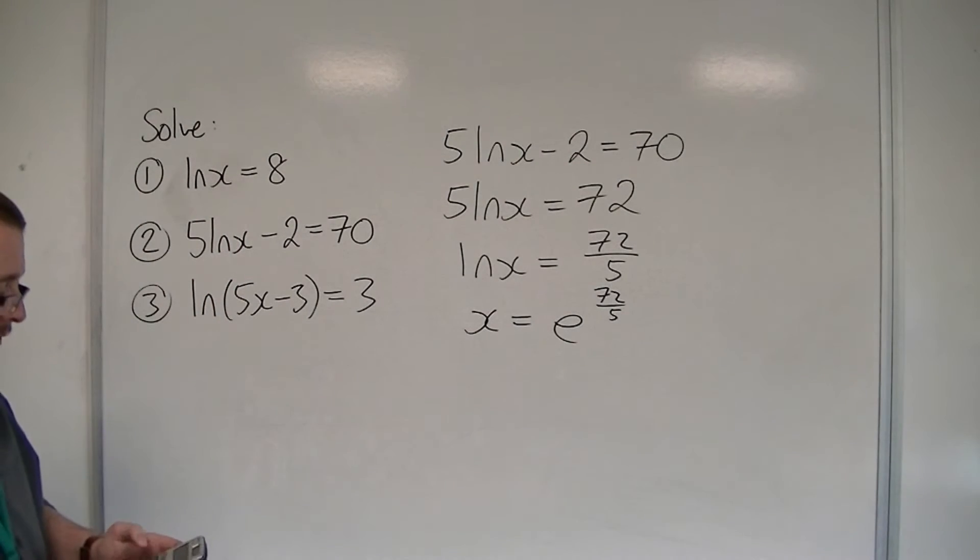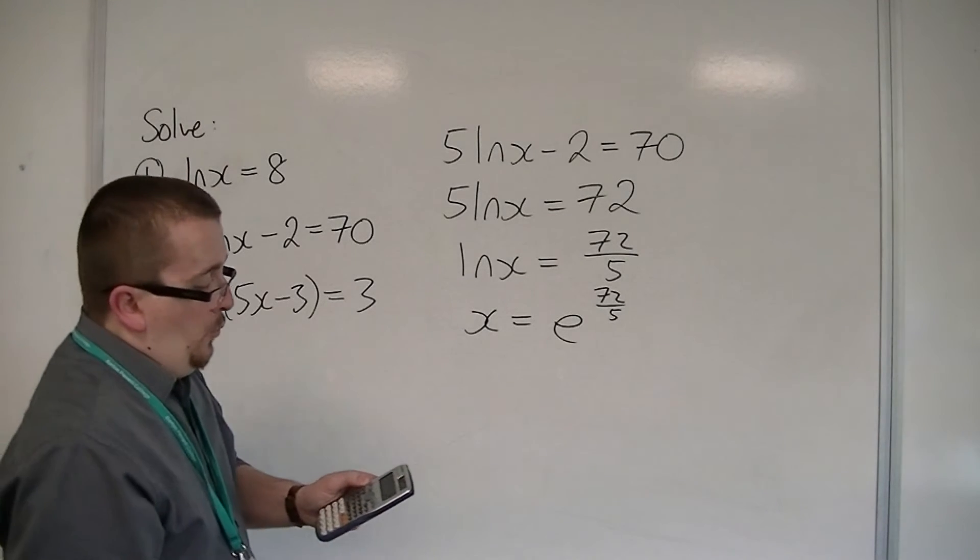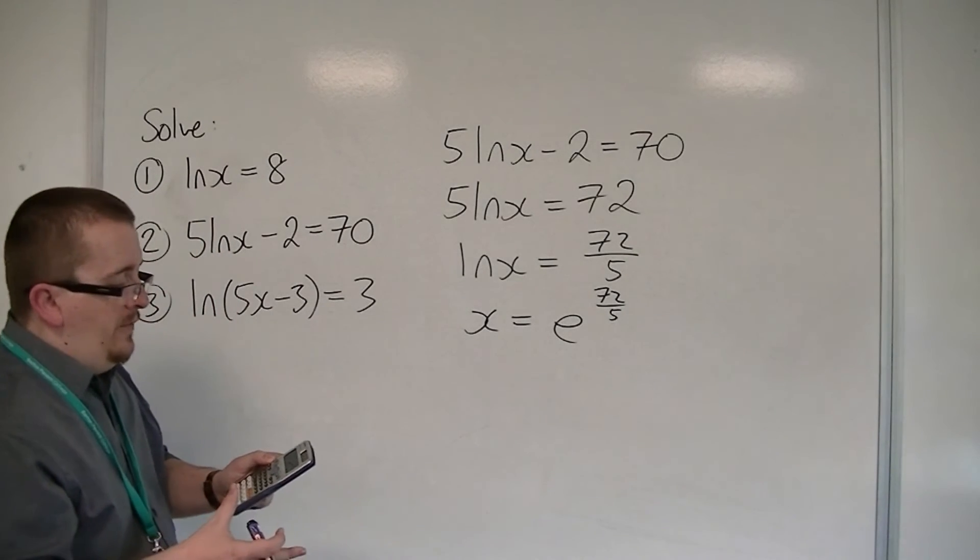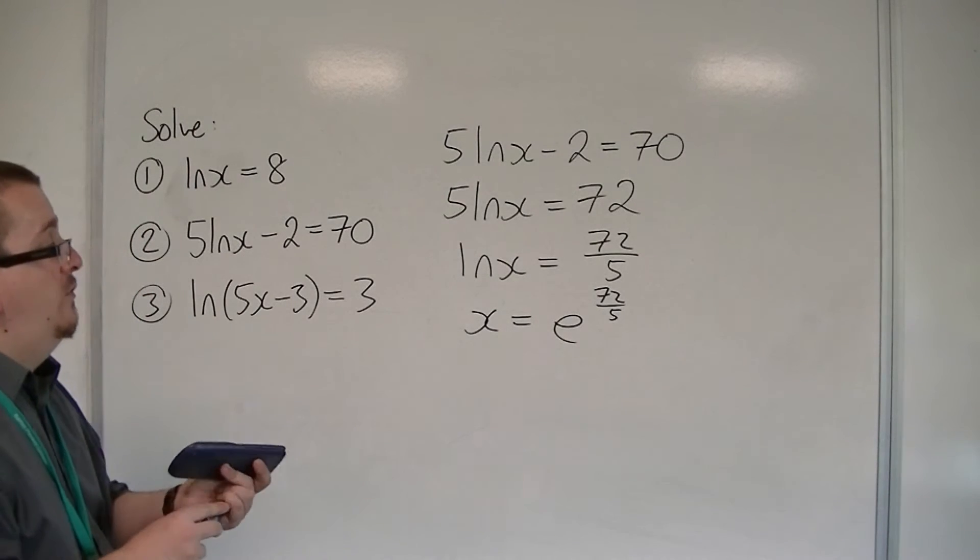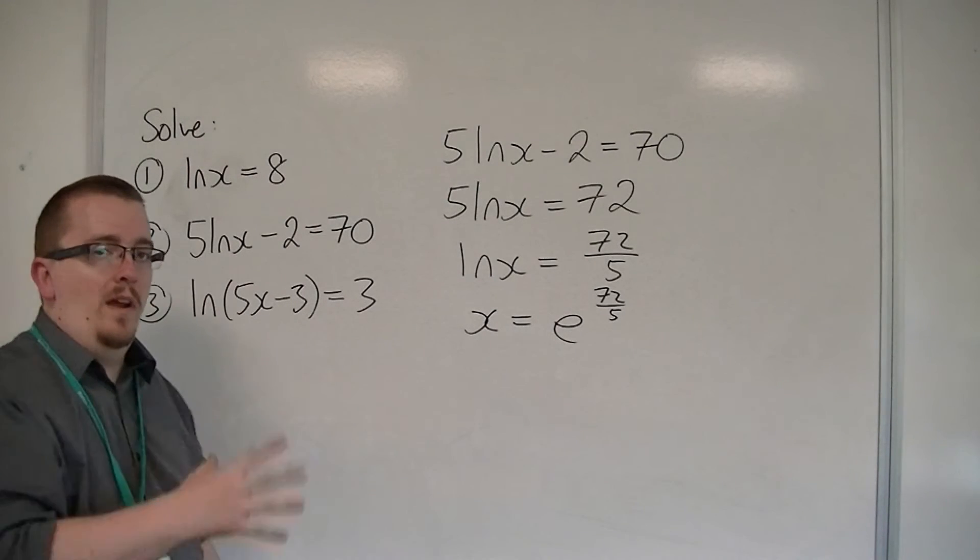e to the 72 over 5 as a decimal is 1,794,074.773 to three decimal places. It's quite a large number.